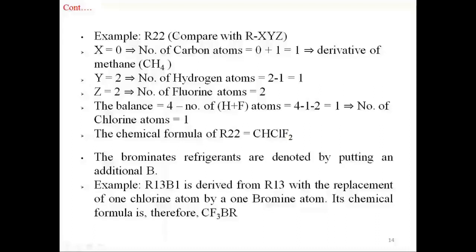Example: R22. Here we have only two digits, so comparing with Rxyz, x = 0, meaning number of carbon atoms = 0+1 = 1, i.e., it is a derivative of methane. Y = 2, so number of hydrogen atoms = y−1 = 1. Z = 2, so number of fluorine atoms = 2. The balance (chlorine atoms) = 4 − 1 − 2 = 1. The chemical formula of R22 is CHClF₂. It is also known as HCFC-22 (hydrochlorofluorocarbon) because it contains carbon, hydrogen, chlorine, and fluorine.